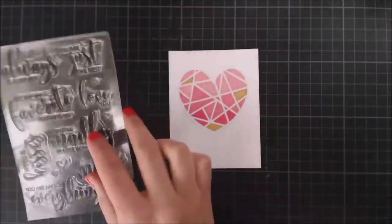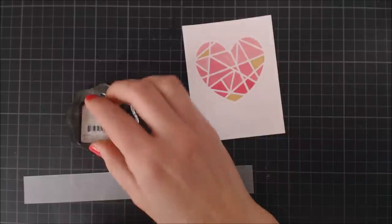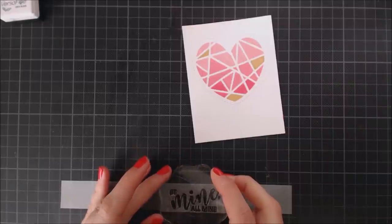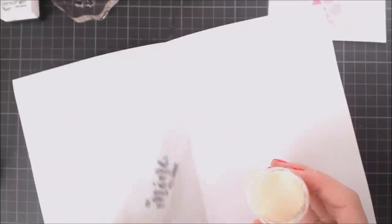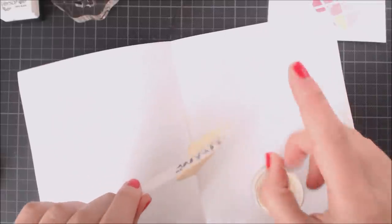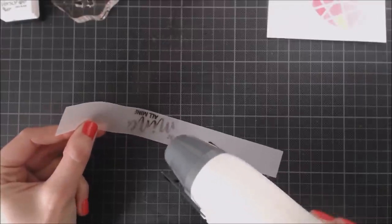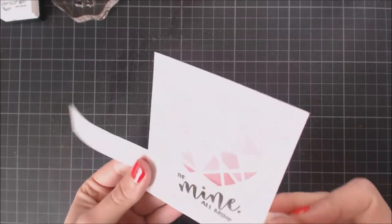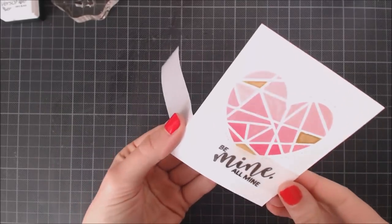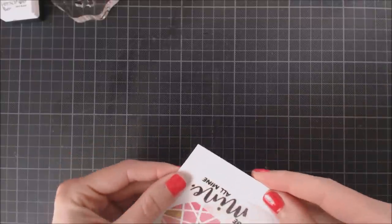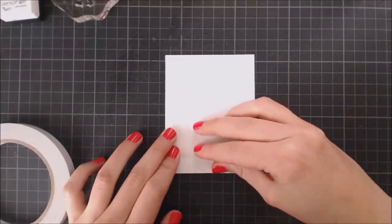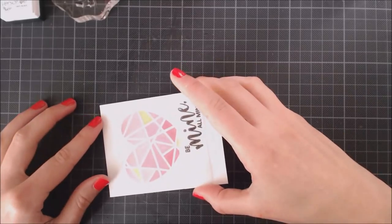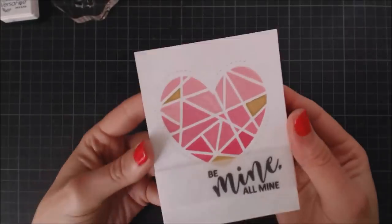For my sentiment, I'm going to be using a strip of vellum and I'm going to ink up my thumb with Versafine black ink because I want to clear heat emboss it to give it some shine. So I add the clear embossing powder and I'm heat setting it with my heat tool. I'm going to be adhering both the vellum strip and my heart panel to the card base using double-sided adhesive tape. I wanted to make these cards smaller than the standard size, so they are 3 ¼ by 4 ¼ and I think this mini size is super cute.